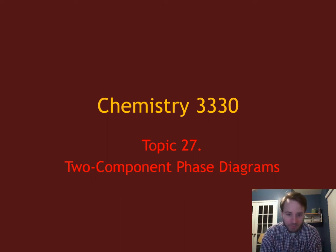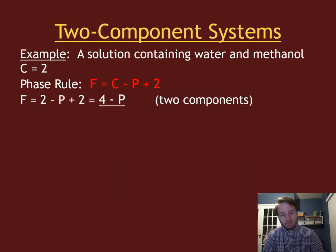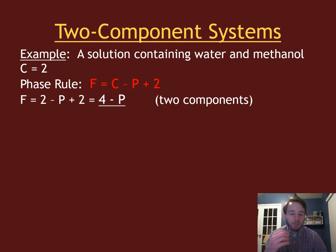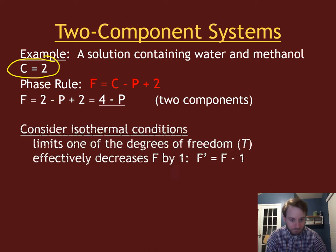Welcome everyone. We're going to start talking about two-component phase diagrams. As a reminder, for any phase diagram we can talk about the phase rule, which describes how many phases we can have in equilibrium and how many degrees of freedom we have for those phases in equilibrium. Given two components — c equals two — the phase rule comes out to be f equals four minus p.